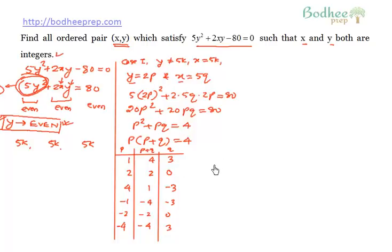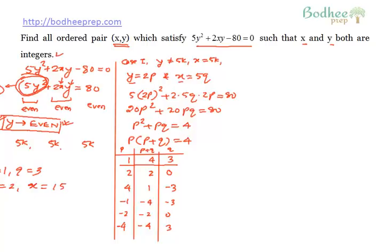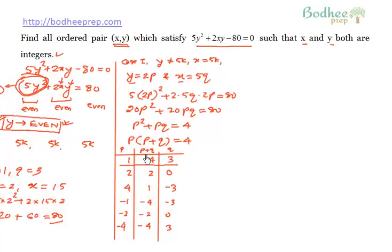So if p = 1 and q = 3, the corresponding values of y and x would be 2 and 15 respectively. For all these values of p and q, we get corresponding values of x and y, which are the integral solutions of the equation. To verify: for p = 1, q = 3, y = 2 and x = 5×3 = 15. Substituting into the LHS: 5(2²) + 2(15)(2) = 20 + 60 = 80. You can similarly test all other values. So the number of pairs for Case 1 is 6 solutions.